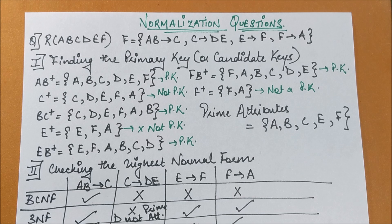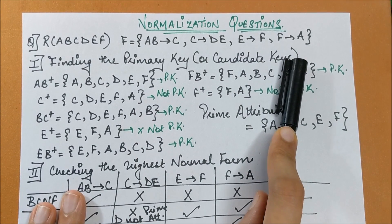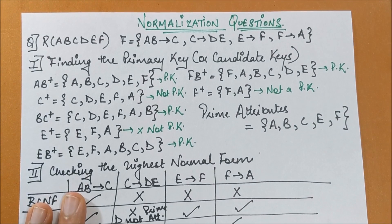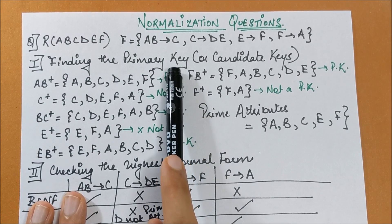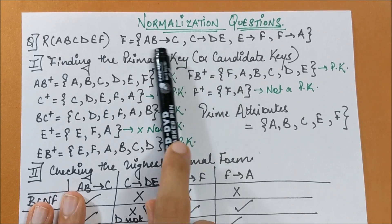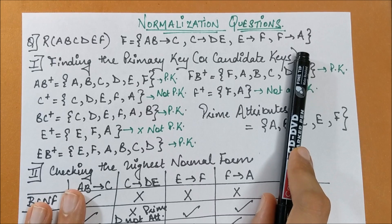Hello friends, in this session I'm going to take up one more very important question on normalization. We have a relational schema with six attributes A to F and a given functional dependency set. The first step to find the highest normal form of any relational schema is always to find the primary key. We start by finding the closures of the left-hand side attributes.